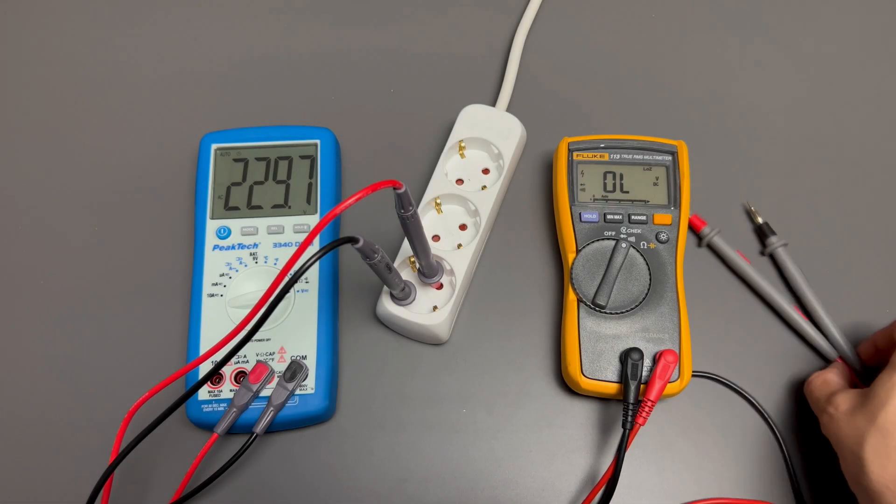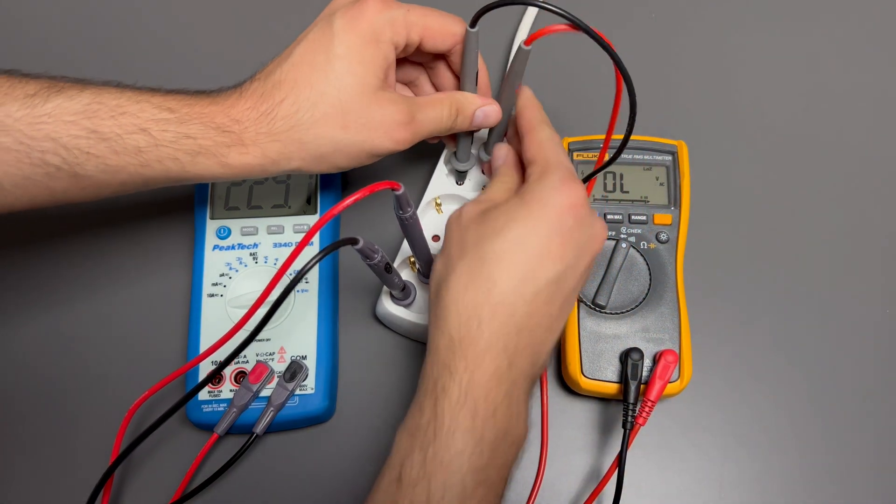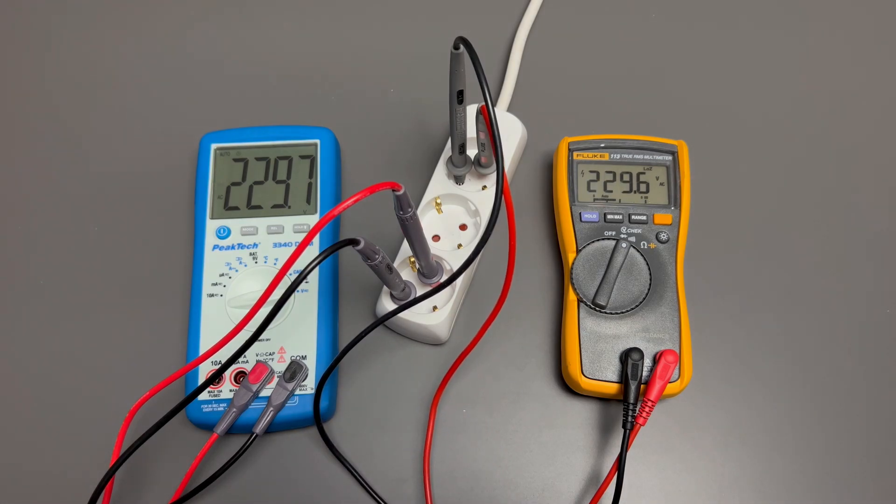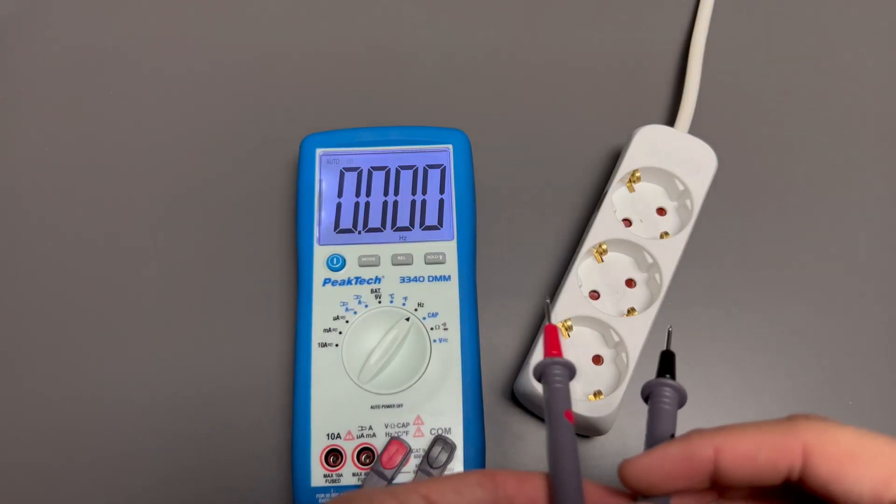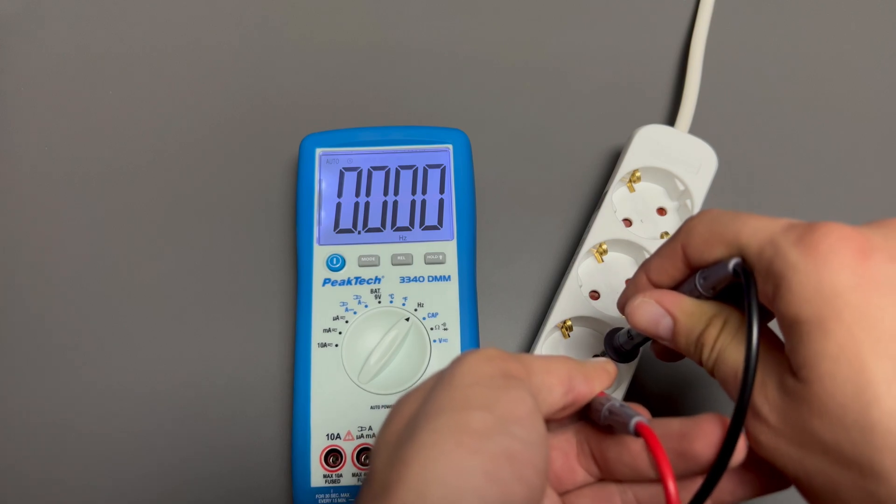Be careful not to touch any energized conductors. Set the function range switch to HERS for frequency measurement.